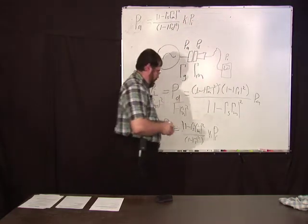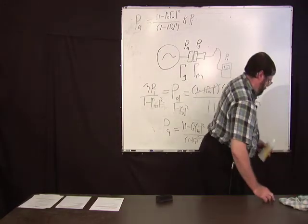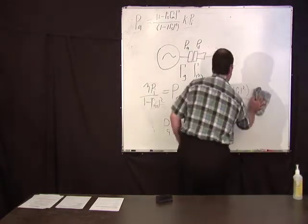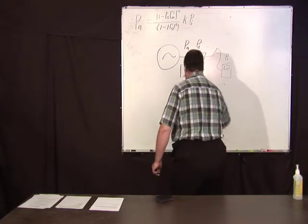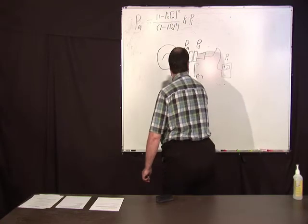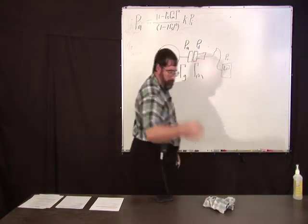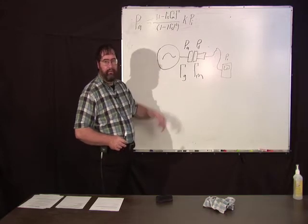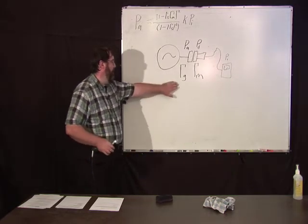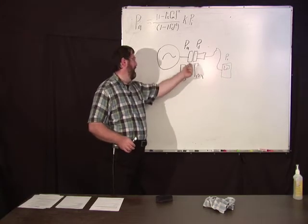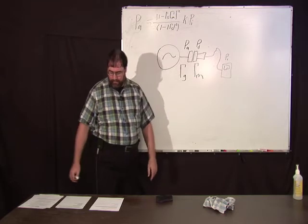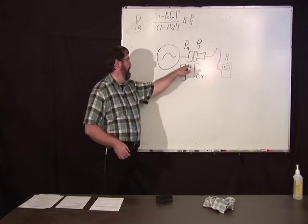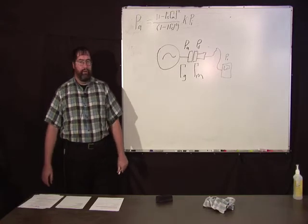Now the problem is, how do you know what this is? Well, you can't know. I mean, it's really hard to measure. You can't just take a network analyzer or something like that and measure the reflection of the source - that doesn't work. So what you need to do is figure out a way of coming up with a known reflection coefficient, and we'll talk about that in a minute.